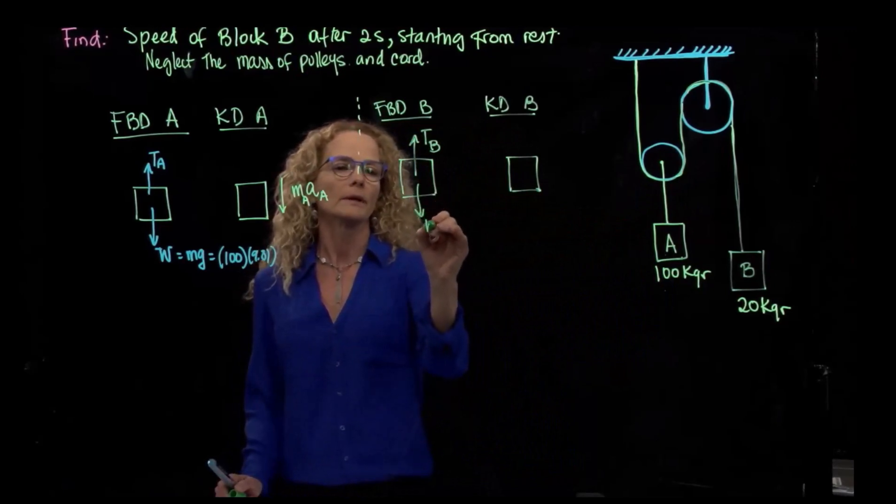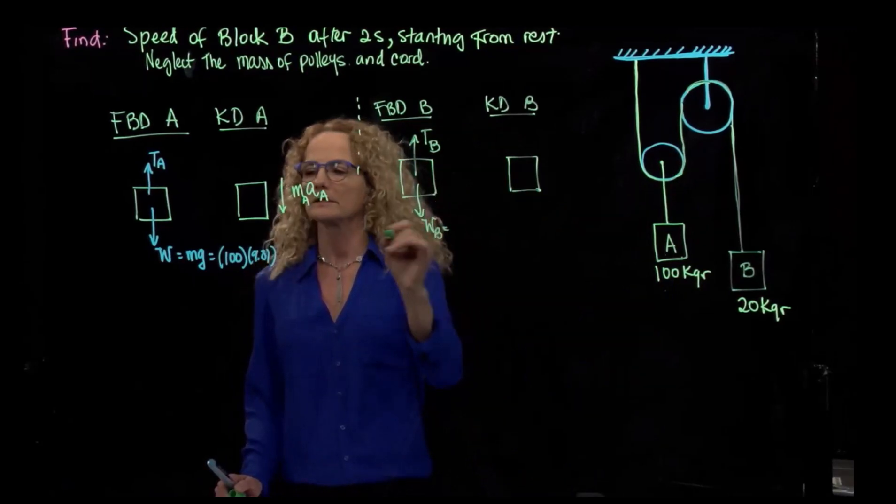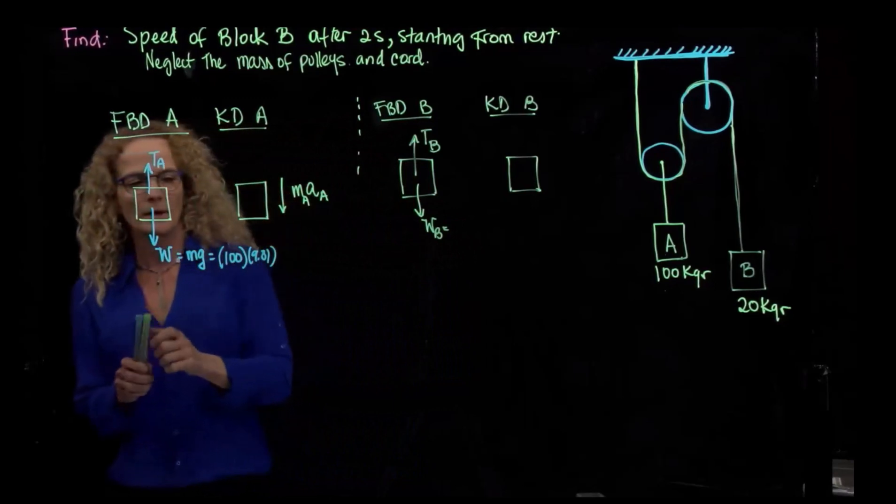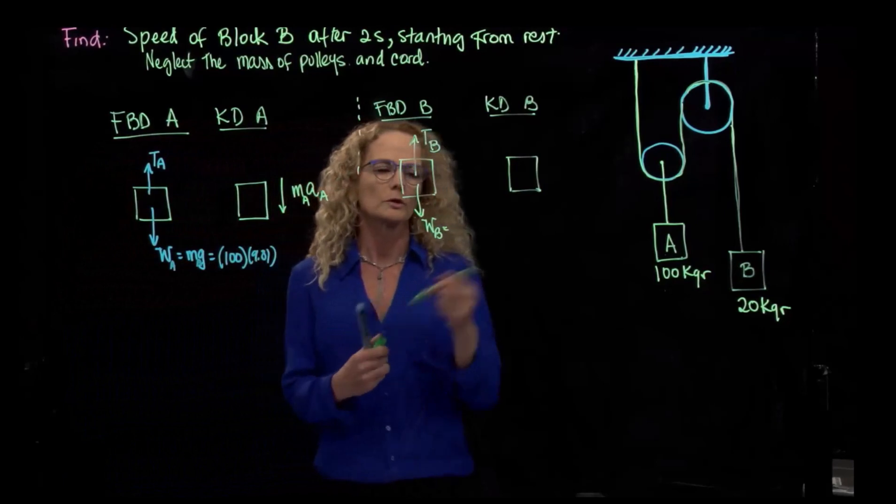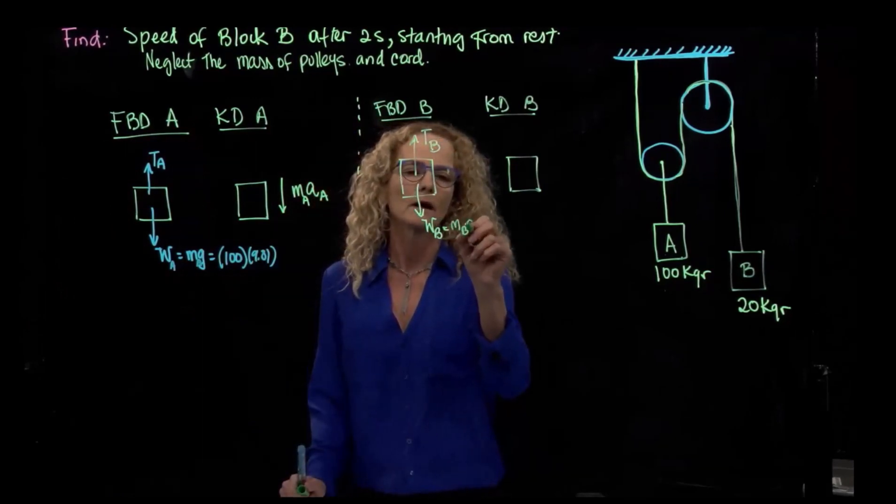This cord is not the same as that one, so let's call it tension B. And then we have weight B, which is, this is mass weight A. Let me say A and A because we have two mass, which will be the mass of B and the gravity.